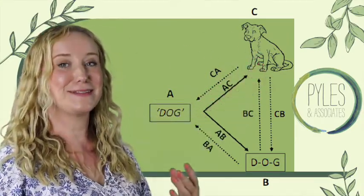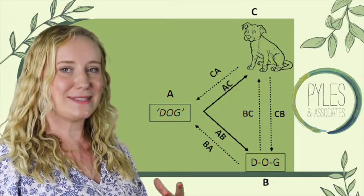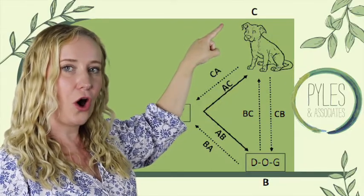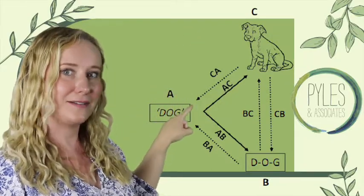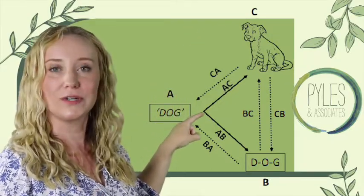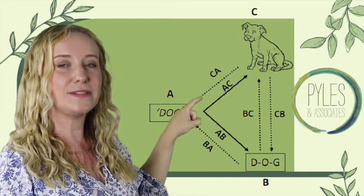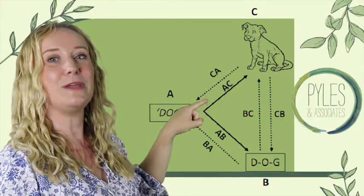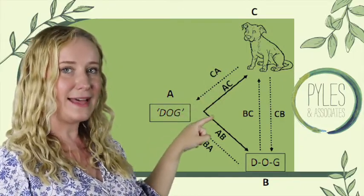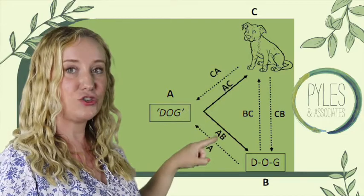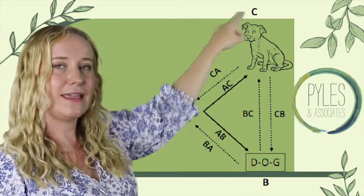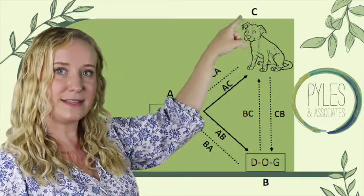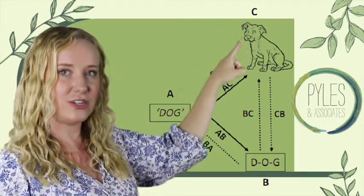Our second relation is symmetry. We see this when we teach that this picture of a dog is called 'dog' — matching it with that auditory stimulus. So when we teach this and then probe it, we test: when they're presented with that auditory stimulus 'dog,' can they touch the picture of the dog? Once they do this and it's untaught, that relation is symmetry.